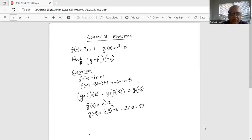So f of x is 3x plus 1. So f of minus 2 is 3 times minus 2 plus 1, which is minus 6 plus 1, which is minus 5.